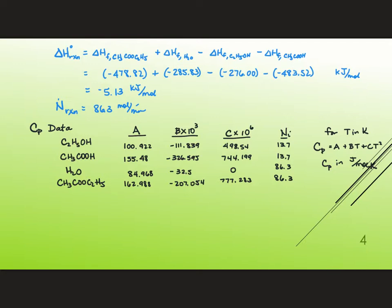And so therefore what I'm going to need to do is calculate the sum for all of my components, n sub i, integral from 25 plus 273 (we need these in kelvin) to 50 plus 273.